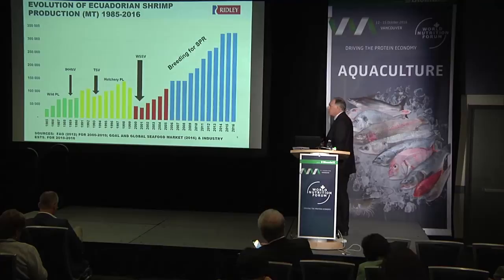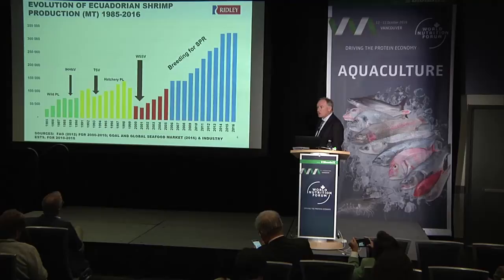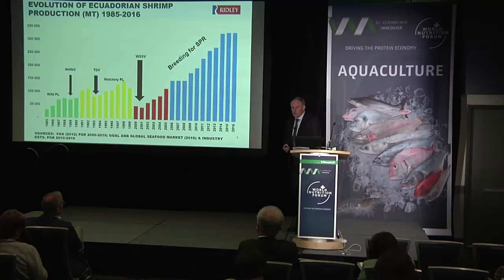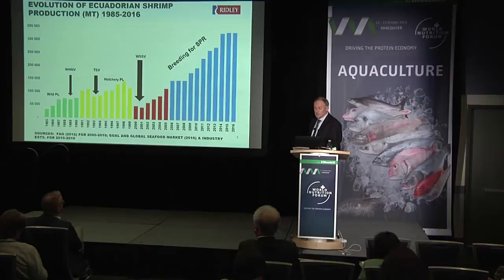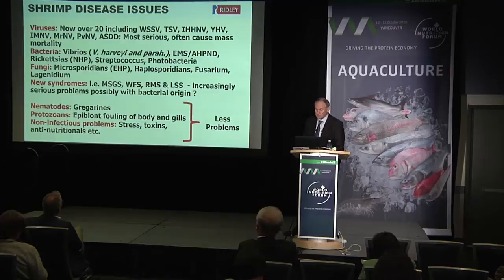By contrast, looking at Ecuador, there have been periodic disease outbreaks significantly affecting production. First IHHN in the late 1980s, then Taura in 1992-93, then White Spot in 1999 put a serious dent in the industry. That persuaded people to look at specific pathogen resistant strains resistant to White Spot. Their production has continued to increase and is now higher than Thailand's. They haven't yet experienced EHP — if that happens, I would expect a similar scenario to Asia. But right now Ecuador is doing very nicely.